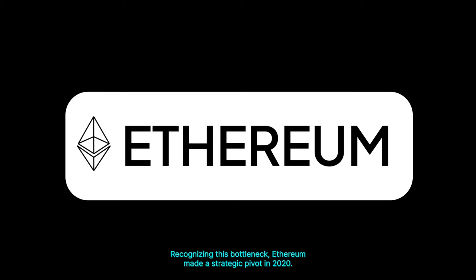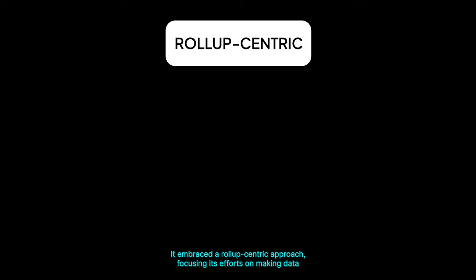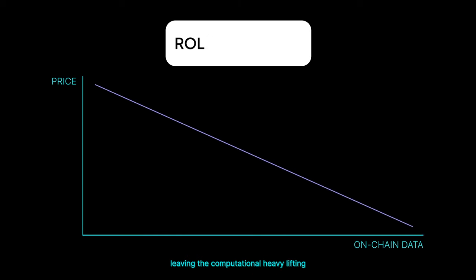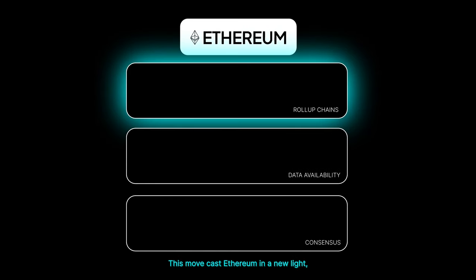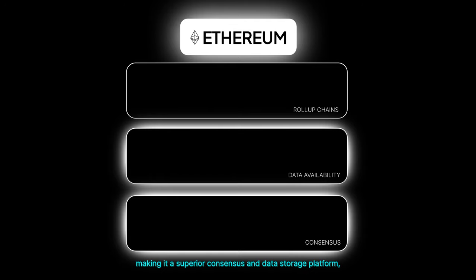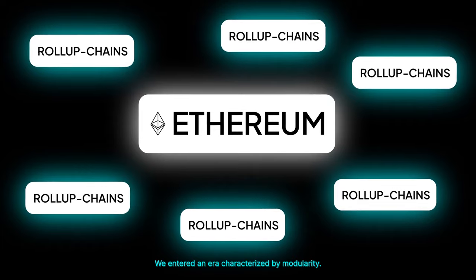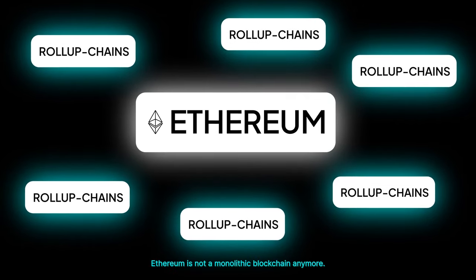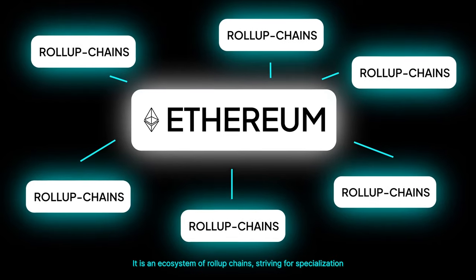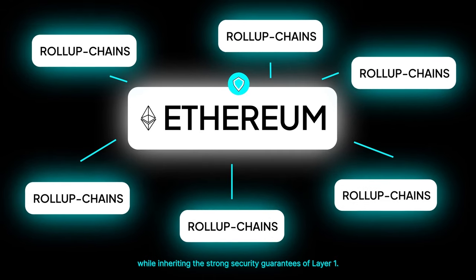Recognizing this bottleneck, Ethereum made a strategic pivot in 2020. It embraced a roll-up-centric approach, focusing its efforts on making data cheaper and scalable, leaving the computational heavy lifting to roll-up projects. This cast Ethereum in a new light, making it a superior consensus and data storage platform, leaving roll-up chains to deal with computation. We entered an era characterized by modularity — Ethereum became an ecosystem of roll-up chains striving for specialization while inheriting the strong security guarantees of layer 1.